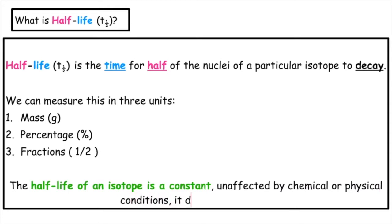The half-life of an isotope is a constant. It is unaffected by any chemical or physical conditions. It does not change.